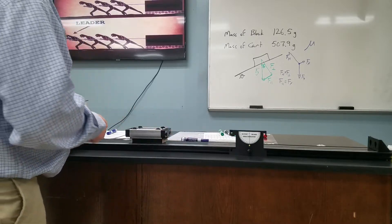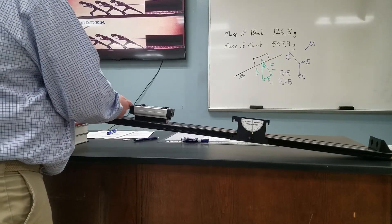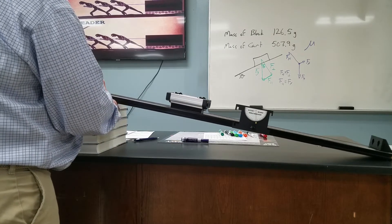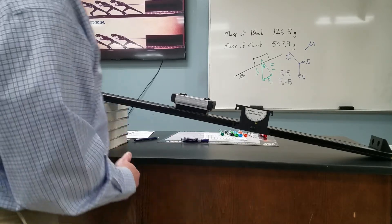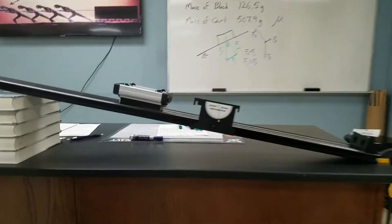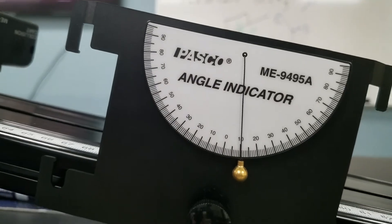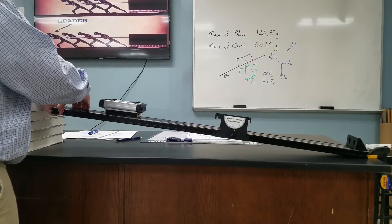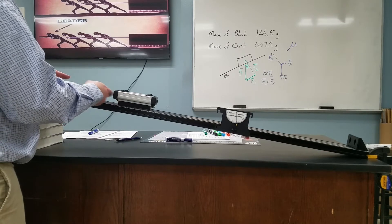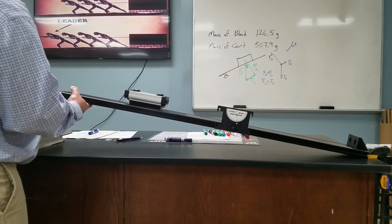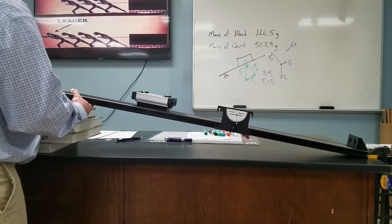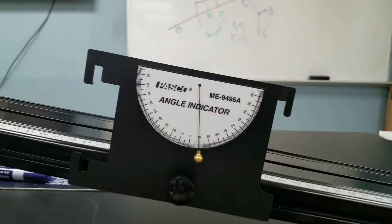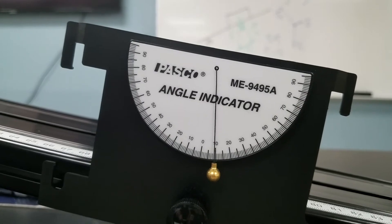Trial two, kinetic friction. Trial two wood side down kinetic friction. Trial three, wood side down kinetic friction — somewhere around there. There's the angle for trial three, wood side down kinetic friction.